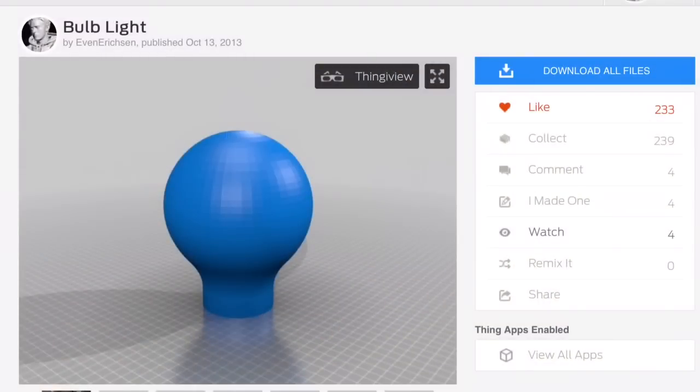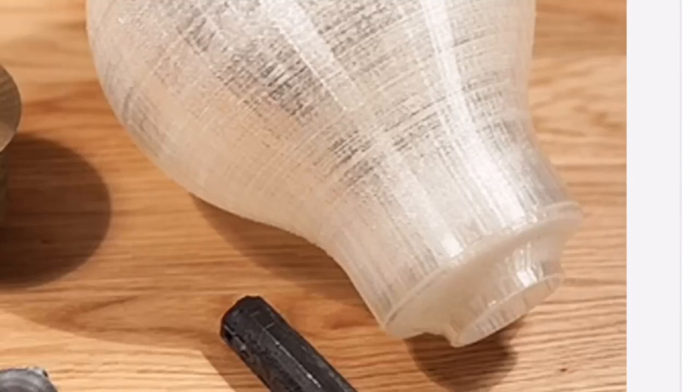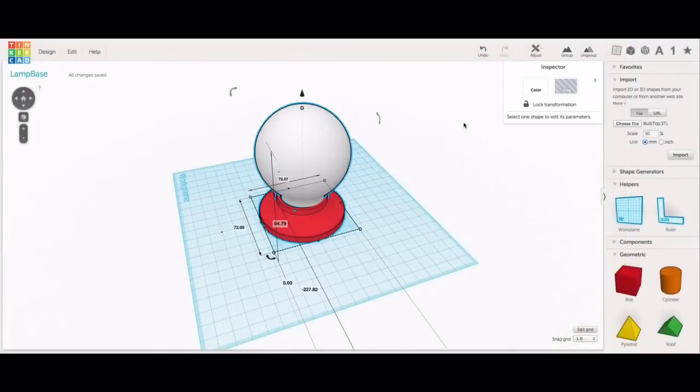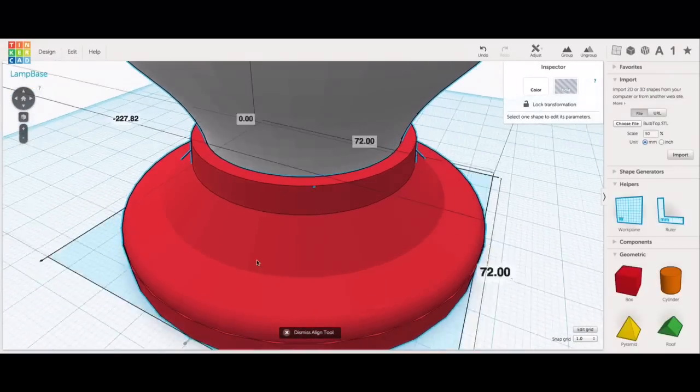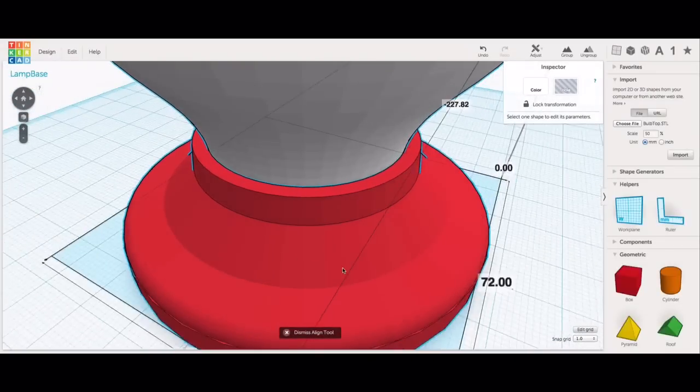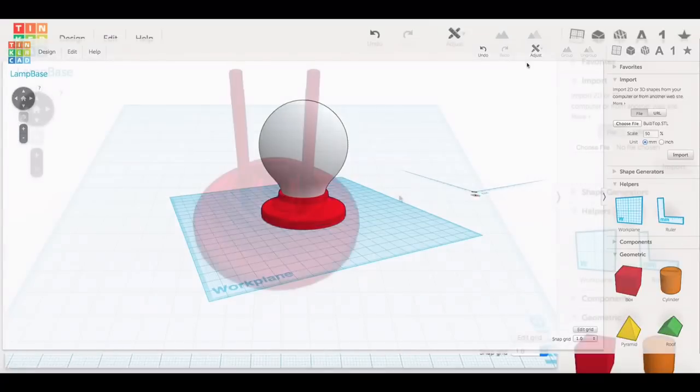I searched Thingiverse and there were several different light bulb designs. This one by Evan Erickson was perfect and it had a base but the base was actually designed to go into the bottom of the bulb because this bulb was really big. So I found if I reduced the size of the bulb shape by 50 percent it actually fit into that piece as a base perfectly all the way around. So that's what I decided to use as my pieces to build my light bulb.